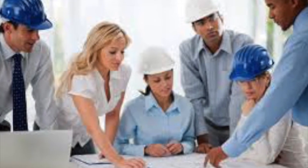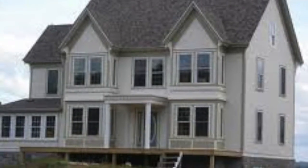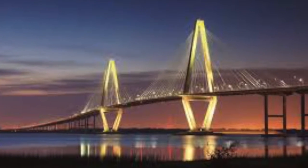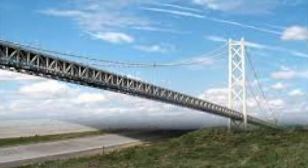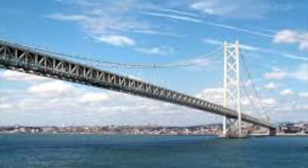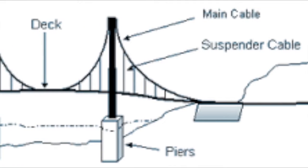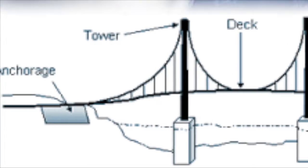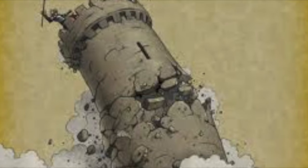Engineers also design everyday buildings such as restaurants, schools, and even our houses. Architects create many types of bridges and plan each one to hold the weight on posts that go into the ground. Suspension bridges use cables to hold the weight — cables attached to the posts hold up other cables connected to the bridge. Towers are another thing they build; they make the framework sturdy so the tower won't crumble and distributes the weight of the tower.